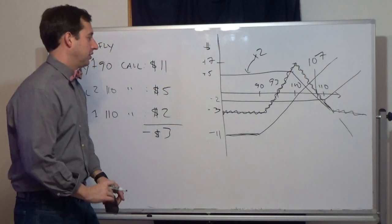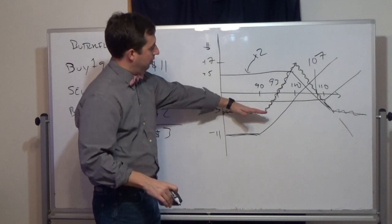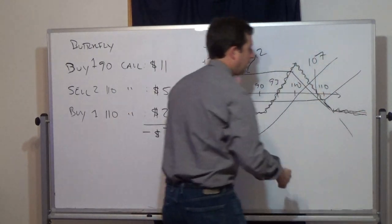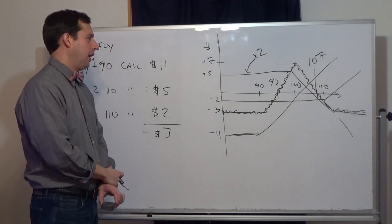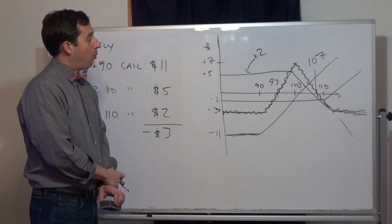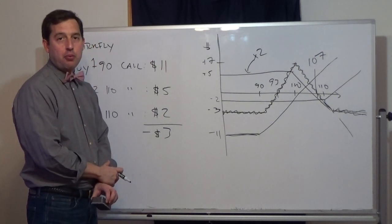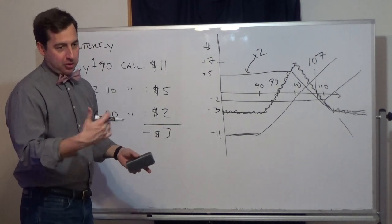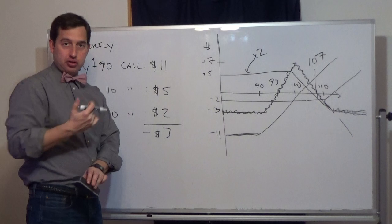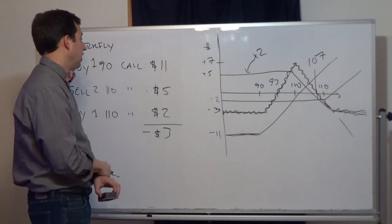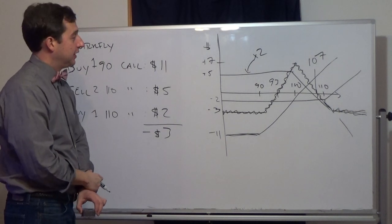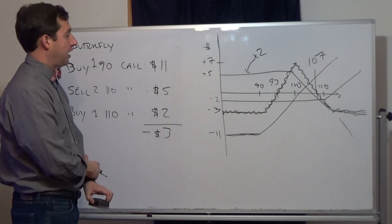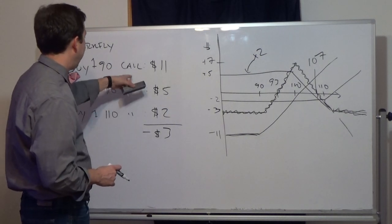The butterfly looks like a short straddle with the tails cut off. It's a $3 loss for anything above $110 or below $90. These spreads are useful for understanding the relationship between call option prices at different strikes. You can create the same butterfly with puts, and by put-call parity it relates puts of different strikes too. Floor traders used these often, though they require a lot of commissions so they're not typical for small investors.